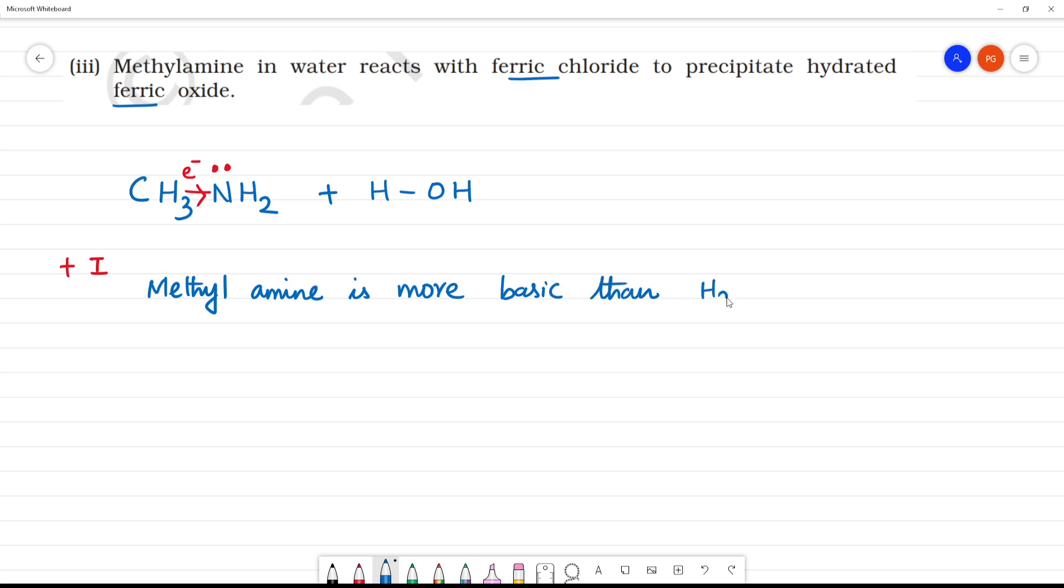Water is basic, but methylamine is more basic. This is base and acid. This will give the electron and this will accept the electron. So we get CH3NH3 plus. The lone pair of electrons on nitrogen accepts hydrogen, H plus one joins. So we get OH minus.